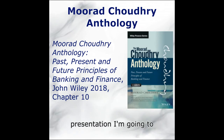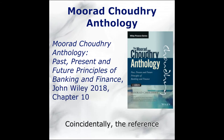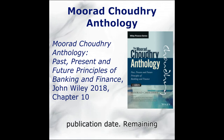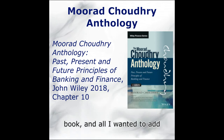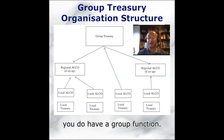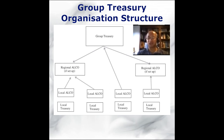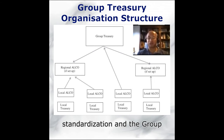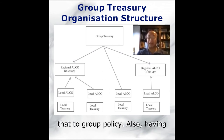The remainder of this presentation references another textbook — the Moorad Choudhry Anthology. Coincidentally, the reference there is also chapter 10, which is pure coincidence as the books are six years apart in publication date. The remaining slides are extracts from this book. What I wanted to add here relates to a group setup where the bank has subsidiaries and/or branches in other jurisdictions. It's important to get the standardization and the group treasury policy in place, with local treasury managing to that.